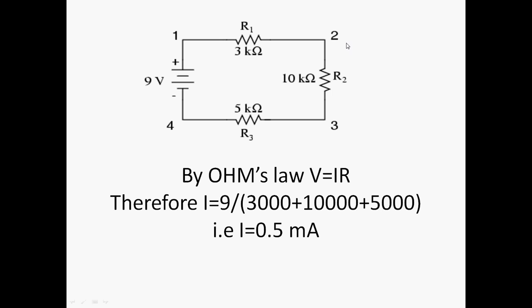Let us take a simple circuit in order to demonstrate how to apply Kirchhoff's voltage law. Before that, we will find the value of current flowing through the circuit with the help of Ohm's law. By Ohm's law, we know that V = IR. Therefore, the current I is found by dividing 9 — that is the voltage — by the resistance in series, which is 18 kilo ohms. On dividing, we find that the current is 0.5 mA.